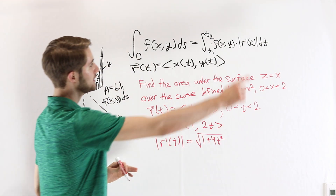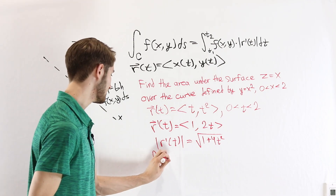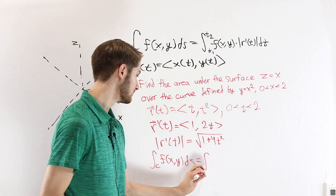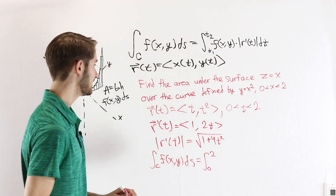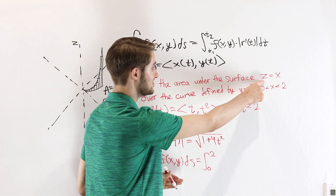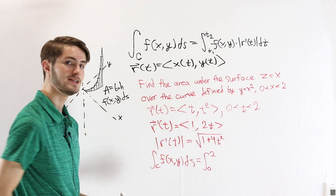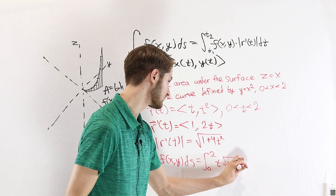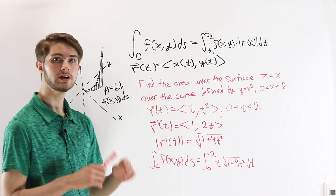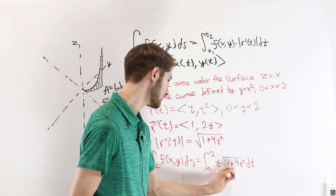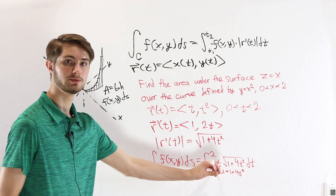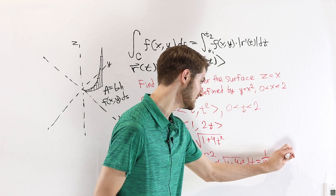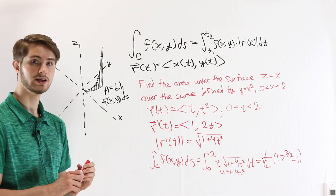This is everything we need. The integral over curve C of f(x, y) ds equals the integral from t equals 0 to 2 of our function evaluated at (x, y). Since the function is z equals x and x equals t, we have t times the square root of 1 plus 4t squared, all times dt. From here it's just an ordinary integration problem — we substitute u equals 1 plus 4t squared, use the t on the outside for du, and working through the whole problem we get that the result is one-twelfth times 17 to the three-halves minus 1.